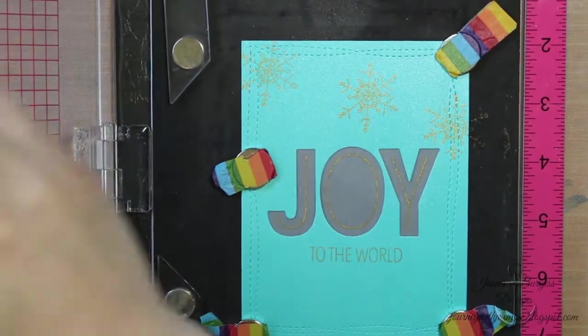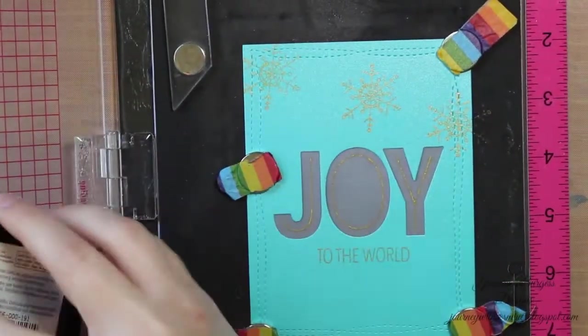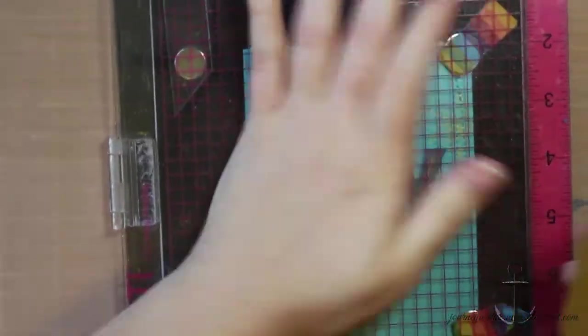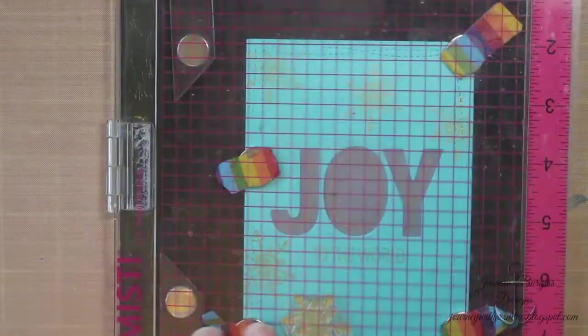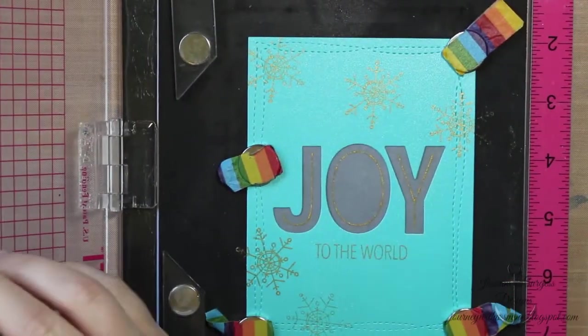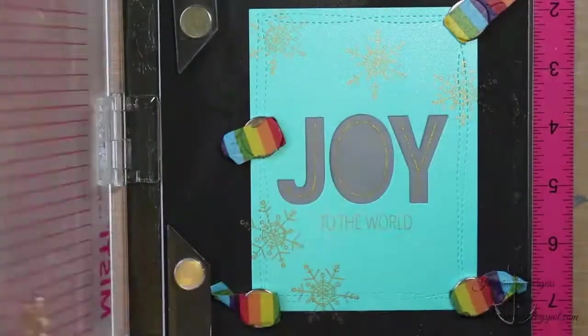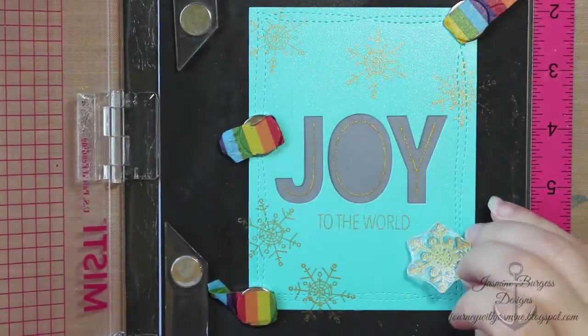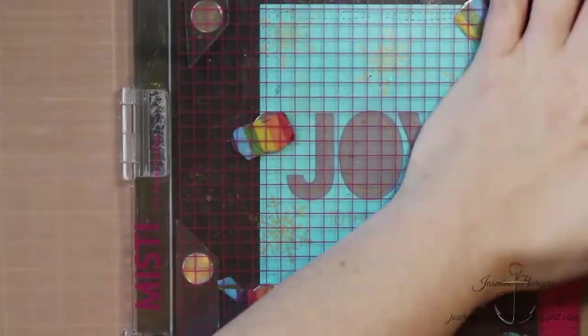So I'm just taking that snowflake stamp around the cover, adding it here and there. And you want to keep in mind you want to use your background stamps with the snowflake in odd numbers. When you have even numbers your brain wants to pair them up and if they don't pair easily it looks off. But if you use odd numbers it doesn't do that.